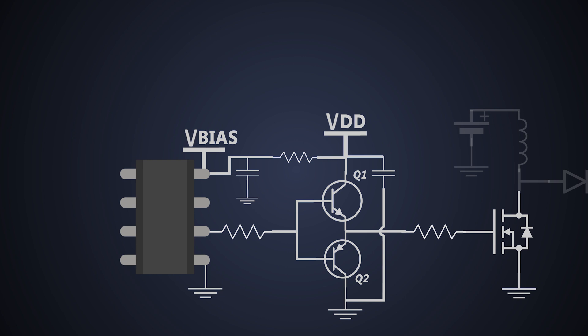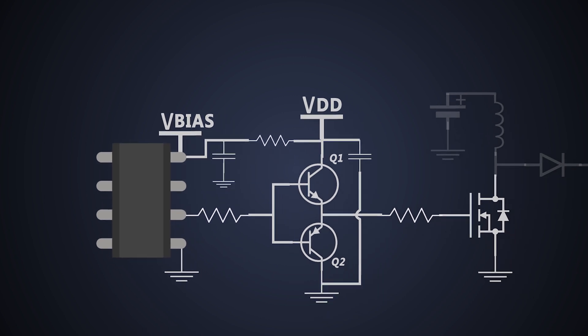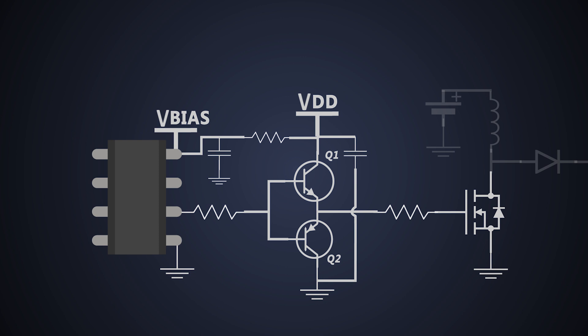However, the BJT-based totem pole driver has some crucial limitations as well. It has lower speed due to BJTs and does not perform well at higher switching frequencies. To mitigate this limitation, the P- and N-channel complementary pair MOSFET driver can be used for higher frequency operation and faster switching.